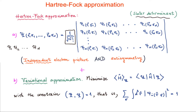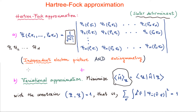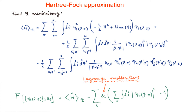The second feature, as we considered in the Hartree approximation, is that we're going to apply a variational approximation. Basically we're going to find the stationary states of the average Hamiltonian considering the anti-symmetric wave function we have here, with the constraint that the wave function has to be normalized. This basically means that in the independent electron picture, each electronic wave function has to be normalized. So our first step is going to be to have an expression for the average Hamiltonian considering that wave function.